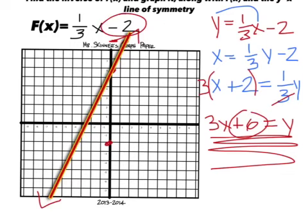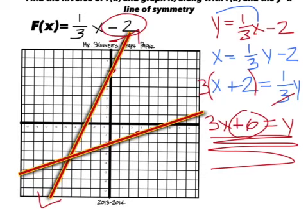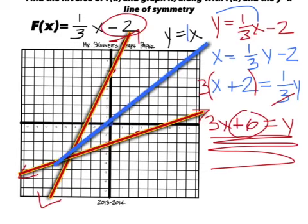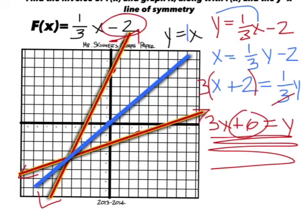The slope for the original function is one-third, so go up one and to the right three, then draw a line. Don't forget the axis of symmetry, which always goes through y equals x on all these problems — go to zero, make a dot, go up one over one since the slope is one, and draw your line.